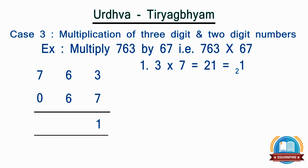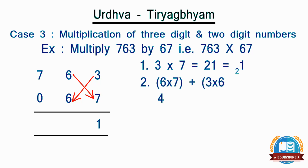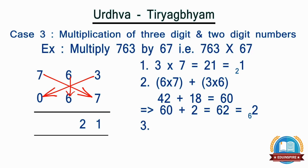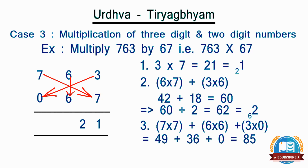Step 2: take the last 2 digits of the numbers and multiply diagonally, i.e. 6 by 7 and 3 by 6, the sum of which becomes 60, and add the carried over number, i.e. 2, to it. So the total becomes 62. We will retain 2 as the second digit of the answer and carry 6 to the left. Step 3: take all 3 digits of the numbers and multiply diagonally and vertically as shown on the screen, i.e. 7 by 7, 6 by 6, and 3 by 0. The total becomes 91. We will retain 1 as the third digit of the answer and carry 9 to the left.